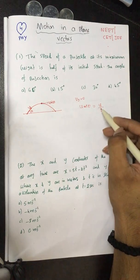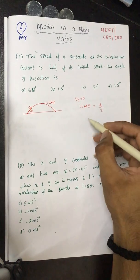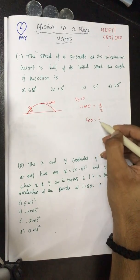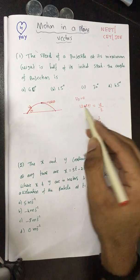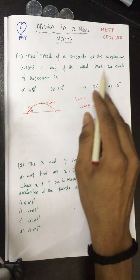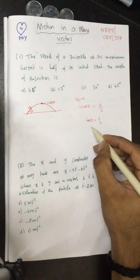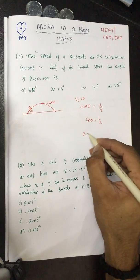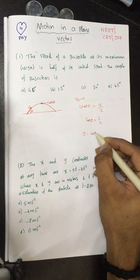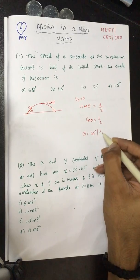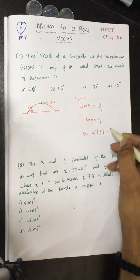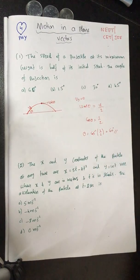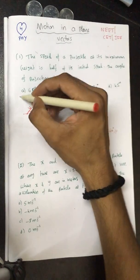Cancelling u, we get cos theta = 1/2. We want to find the angle of projection theta. So theta = cos⁻¹(1/2), which is nothing but 60 degrees. So the answer is 60 degrees.